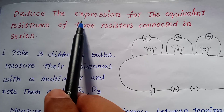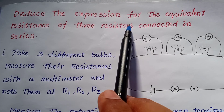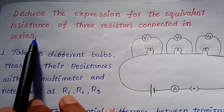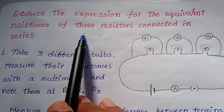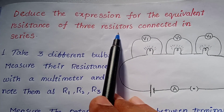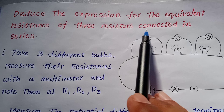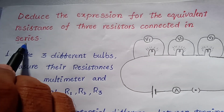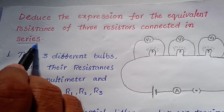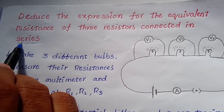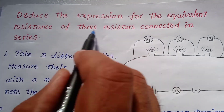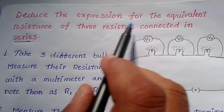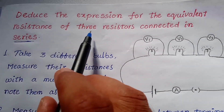See, deduce the expression for the equivalent resistance of three resistors connected in series. The series connection is given, and resistors are equal to equivalent resistance.